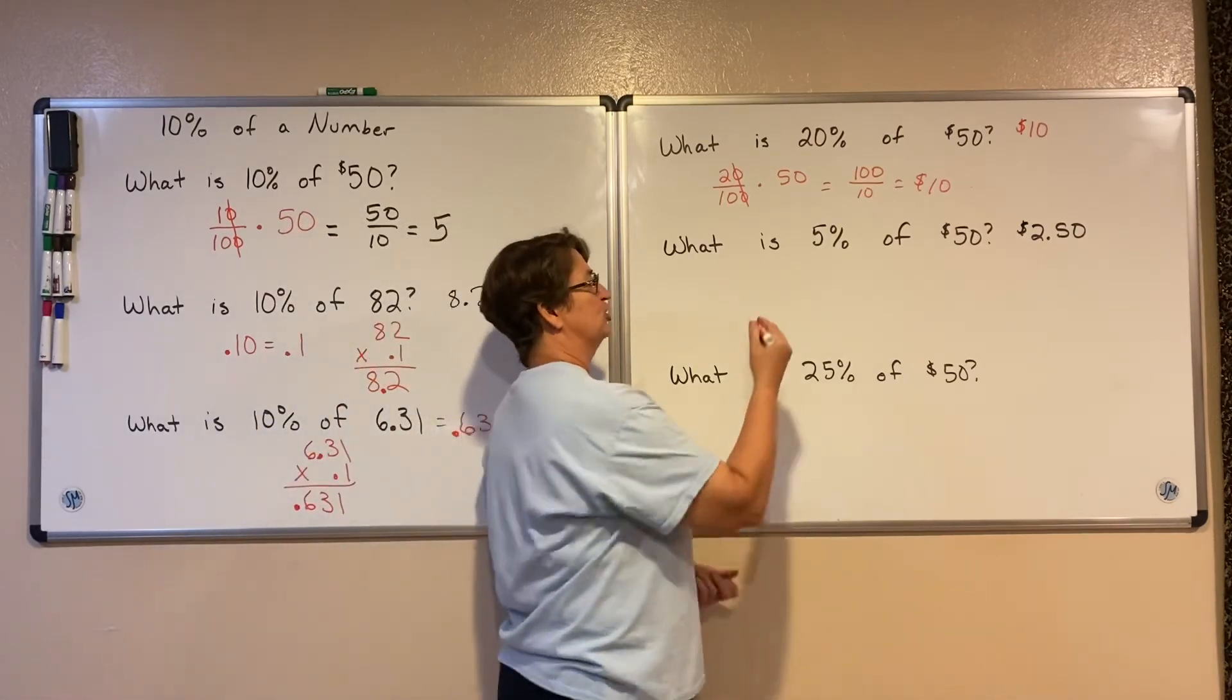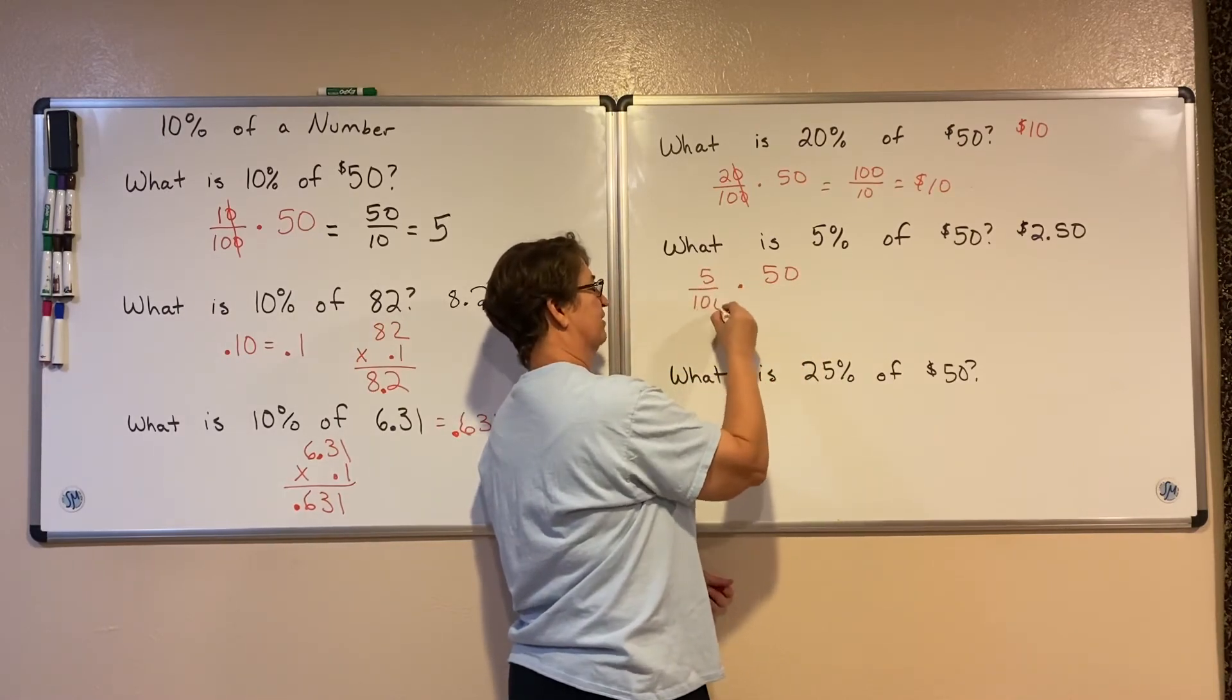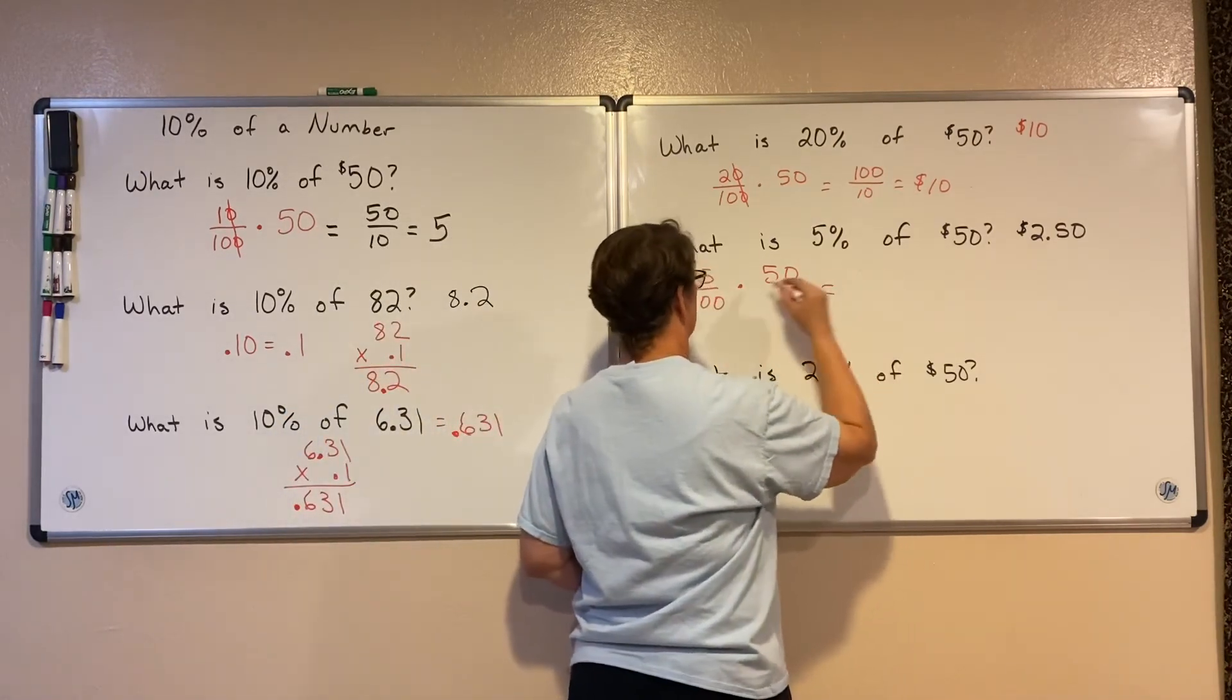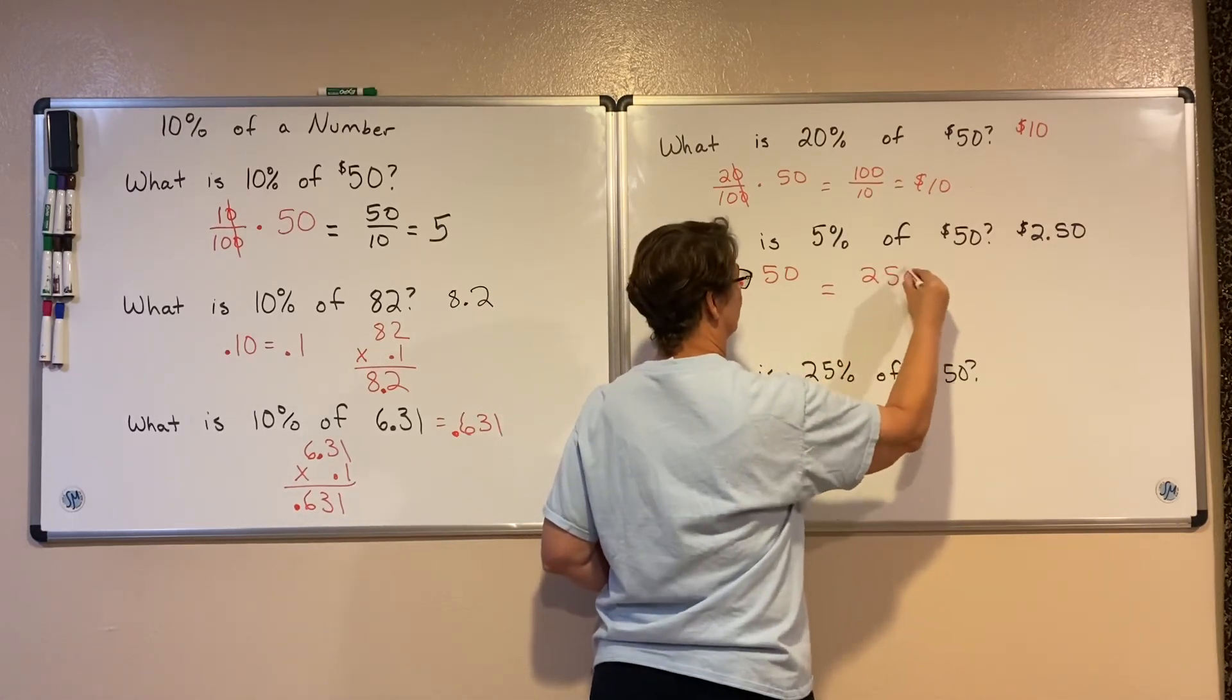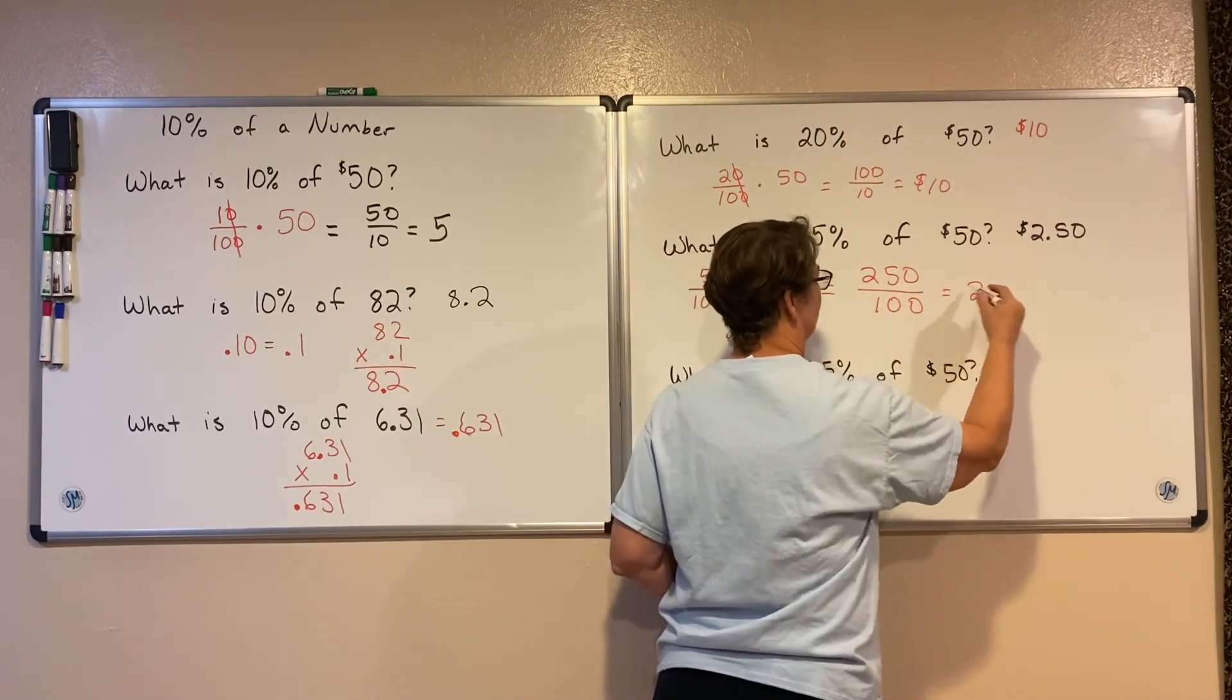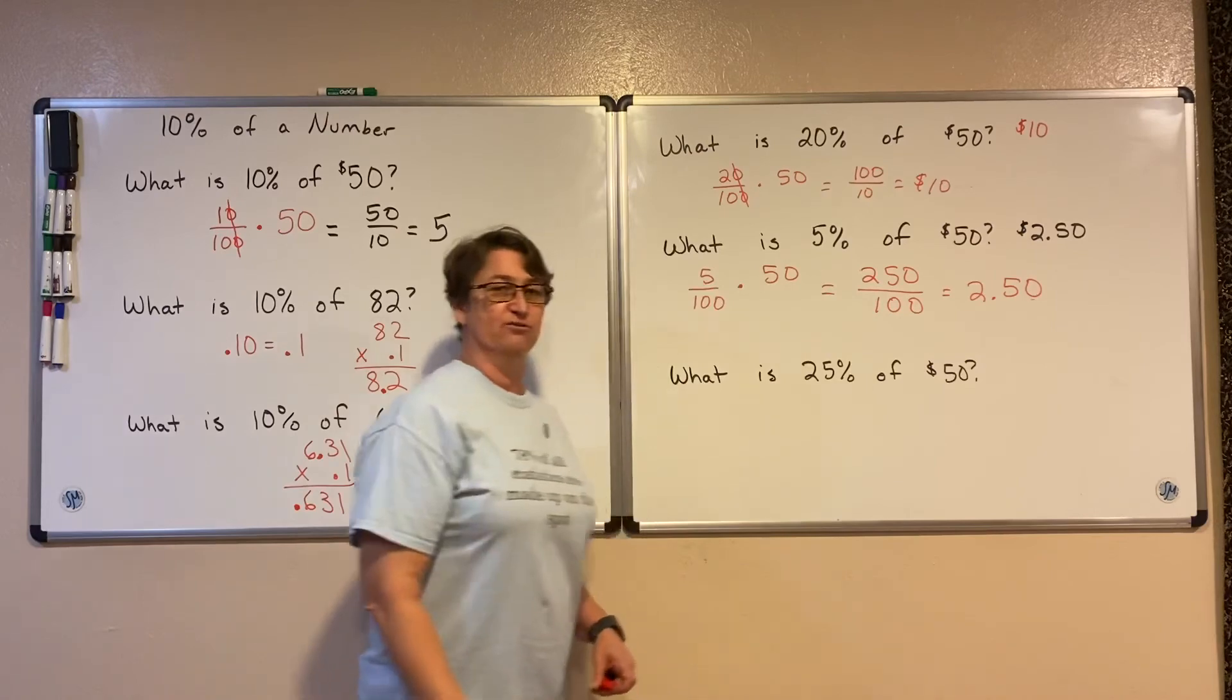I could do the multiplication. I could say 50 times 5 over 100 to determine that. Well, this is $2.50. You could do the multiplication, the division first, or you can just multiply straight across and then divide so that you've got 100 divided into 250, which does give you out to the hundredths place. The last number is going to be in the hundredths place. So it's $2.50.